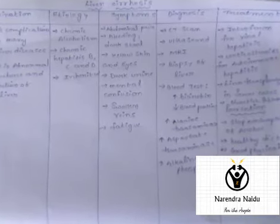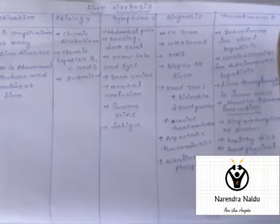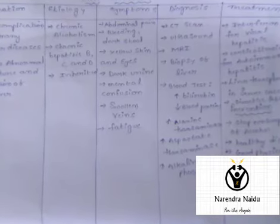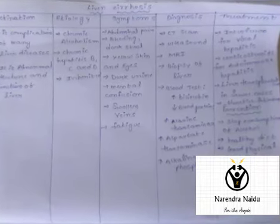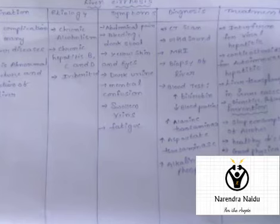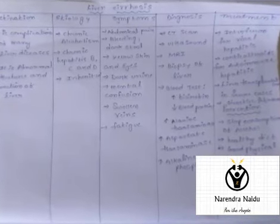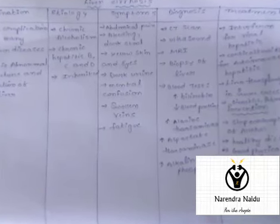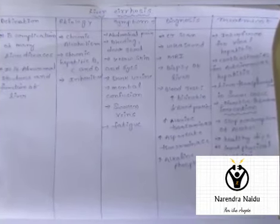Liver biopsy can be taken for diagnosing liver cirrhosis. Blood tests confirm the disease if there are increased levels of bilirubin, decreased levels of blood protein, or increased levels of alanine transaminase enzyme, aspartate transaminase enzyme, or alkaline phosphatase enzyme. These are the tests for diagnosing liver cirrhosis in the patient.